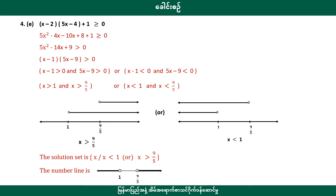X minus 2, 5x minus 4, plus 1, greater than zero. This is the same. We have a solution. If you want to see the next step, you can see the next step. The next step is x greater than 1, x greater than 9.5, x less than 1, x less than 9.5.